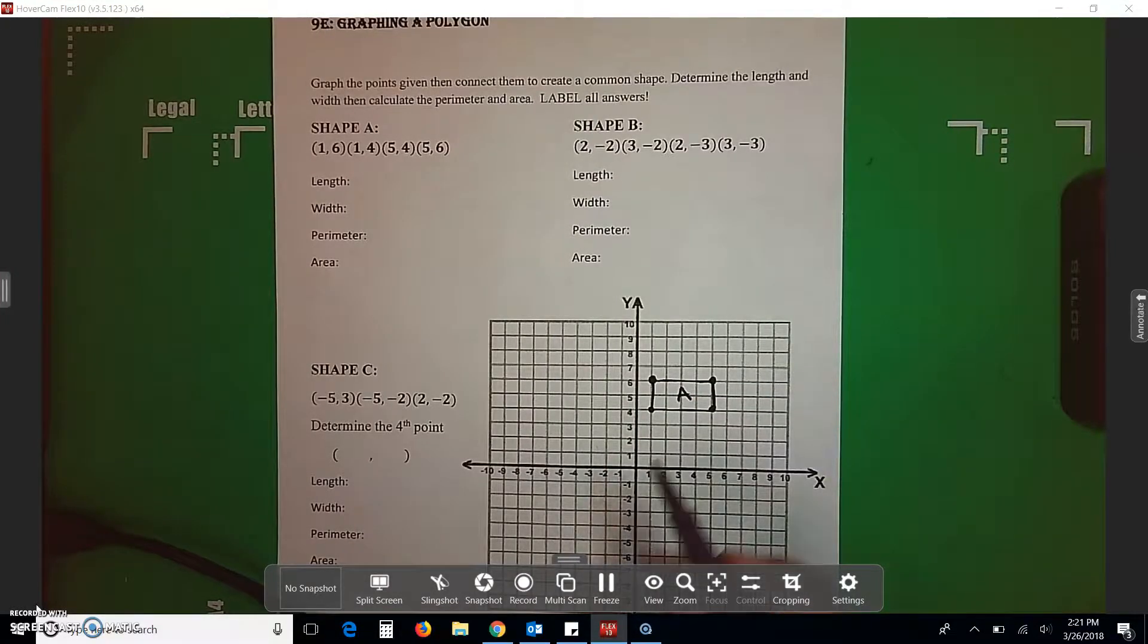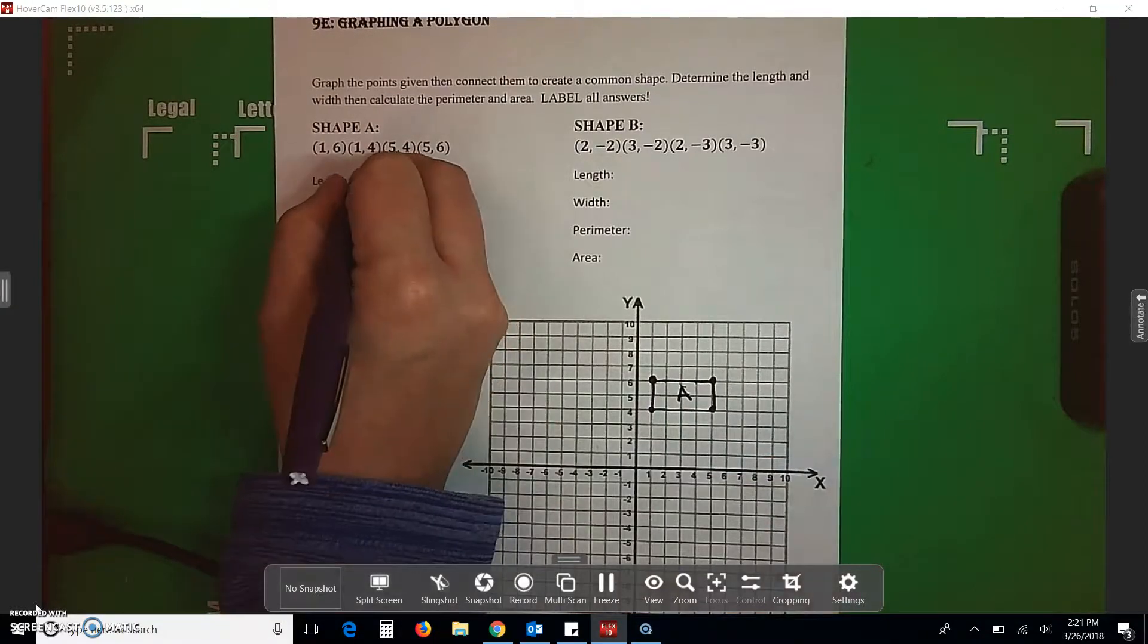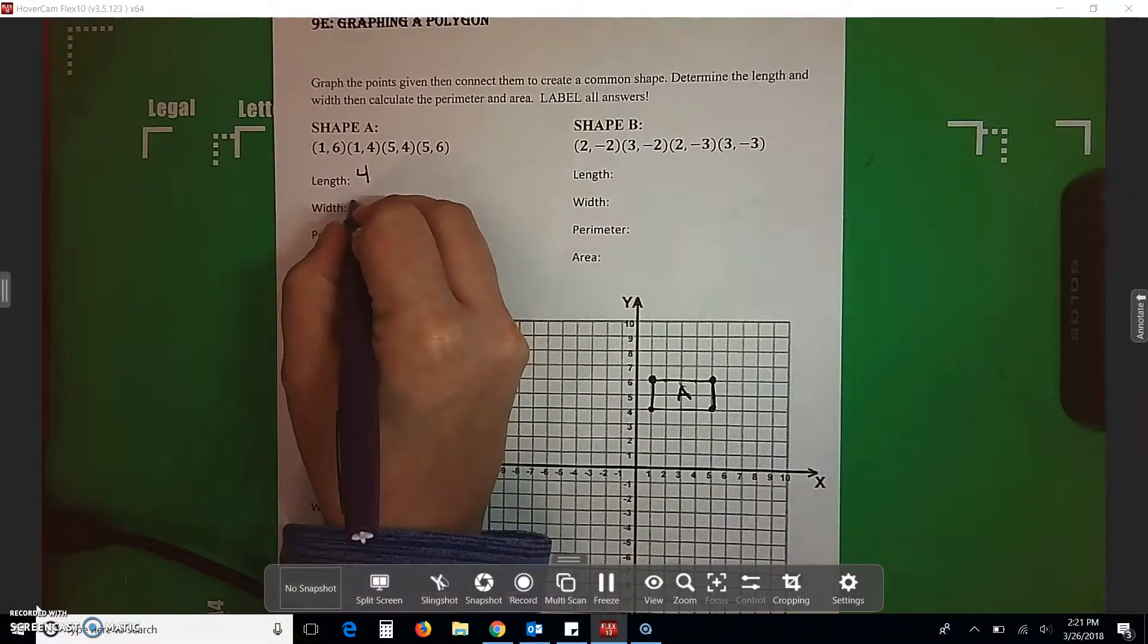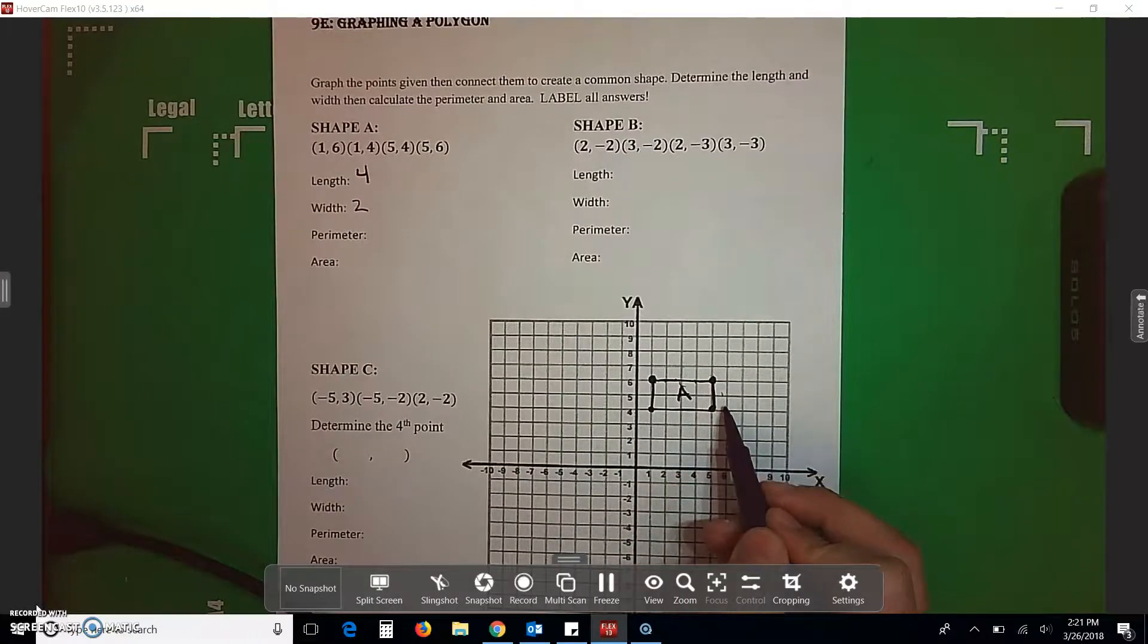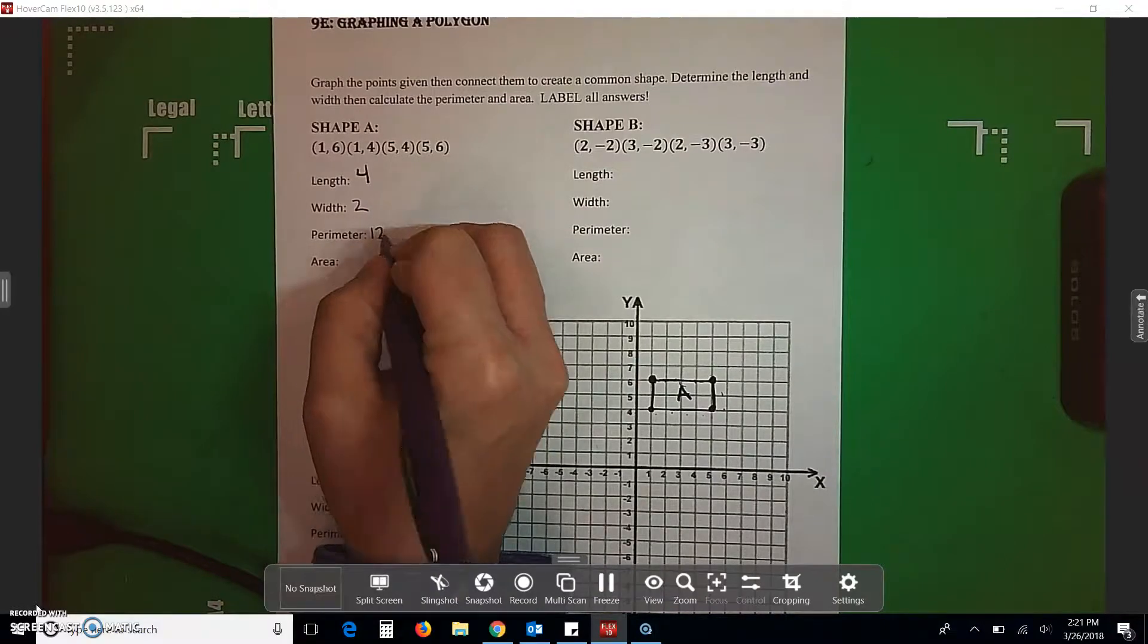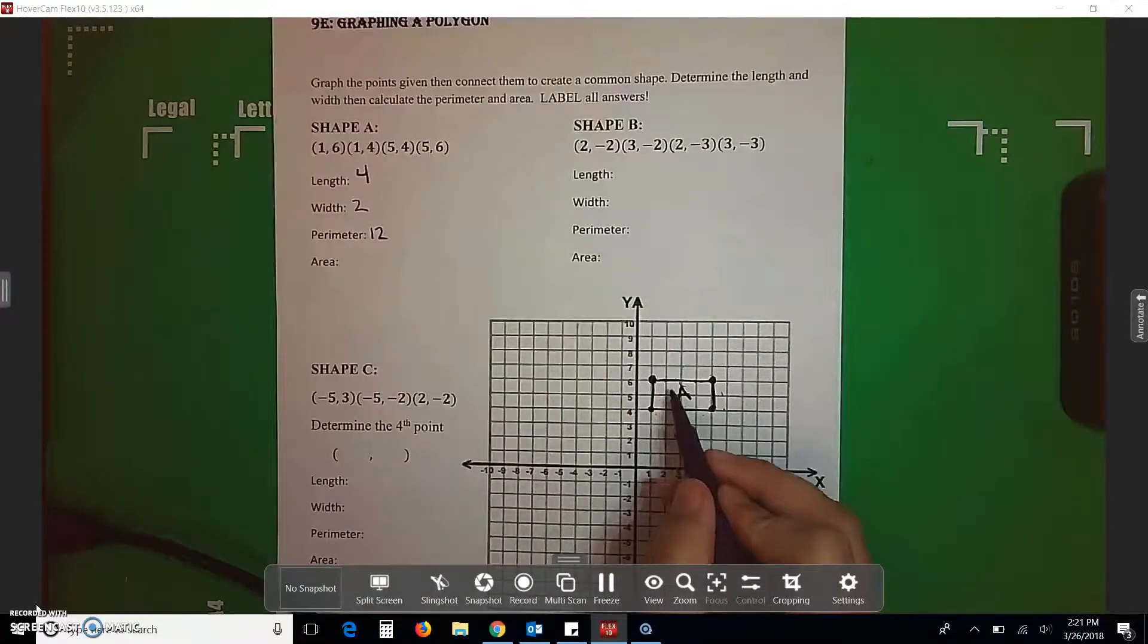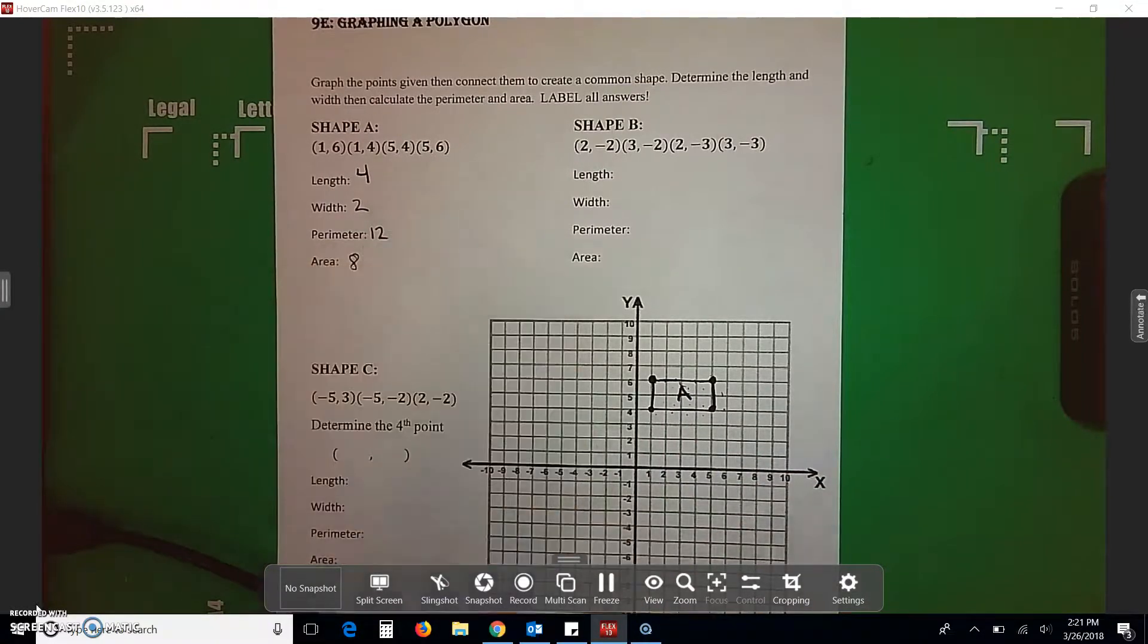Now, to get length on this one, we just count how many over we go, which is 1, 2, 3, 4. Our width is how many boxes down, which is 2. Perimeter is how many all the way around. So, we've got 1, 2, 3, 4, 5, 6, 7, 8, 9, 10, 11, 12. And the area is how many whole boxes we have in the middle. 1, 2, 3, 4, 5, 6, 7, 8.